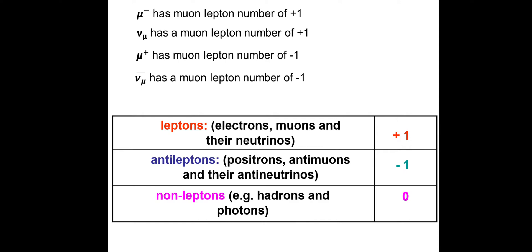Just a reminder: leptons have lepton number plus 1, antileptons minus 1, non-leptons 0 — this holds for muon leptons as well. The mu-minus, a standard muon, has a muon lepton number of plus 1. The muon neutrino also has a muon lepton number of plus 1. The mu-plus, which is the antimuon, has a muon lepton number of minus 1. The anti-muon neutrino also has a lepton number of minus 1. You may want to write these down while we attempt the next questions.